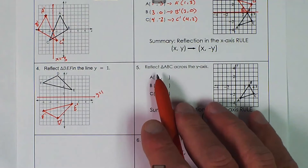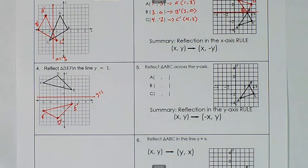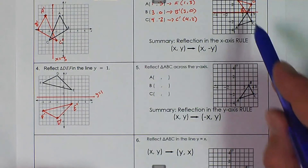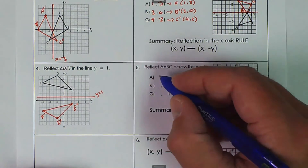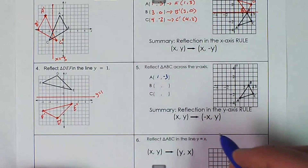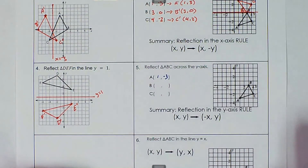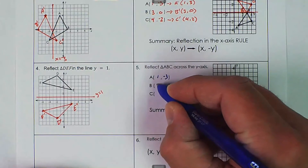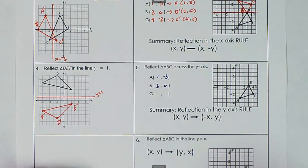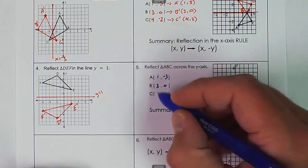Now we have the reflection of triangle ABC across the y-axis. We write the rules down. Using the same coordinates as above: A is (1, negative 3), B is (3, 0), and C is (4, negative 2).